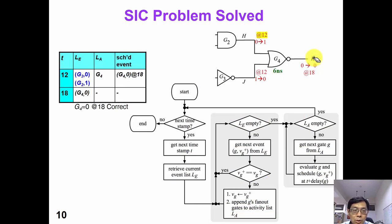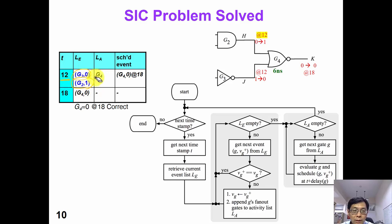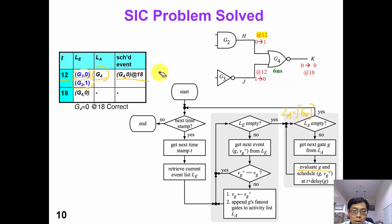Now let's look at the same simultaneous input change problem. Using the second path algorithm, both G3 falling to 0 and G2 rising to 1 will be evaluated all together in the second path. And we will have one gate G4 in the activity list. When we evaluate the output, we will find that G4 is 0 at time 18. So this is the correct output. We solve the SIC problem using the second path.